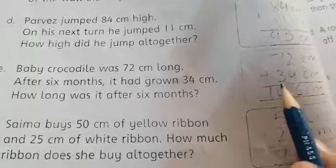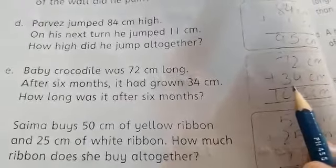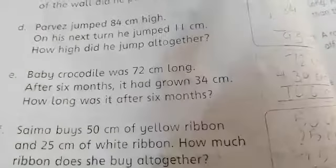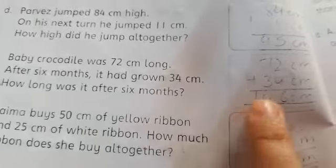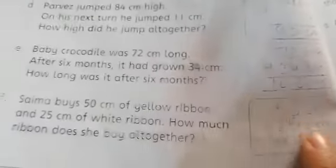Baby crocodile was 72 centimeter long. After 6 months, it had grown 34 centimeter. Now we will add these two centimeters. The total length of crocodile will be 106 centimeter after 6 months.